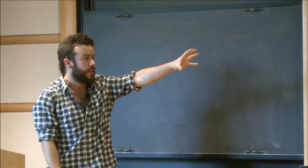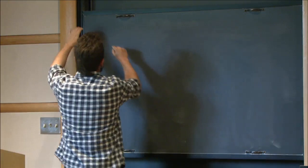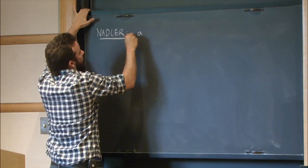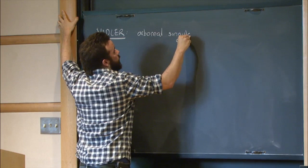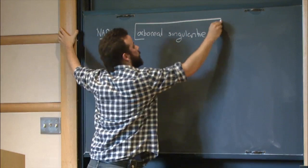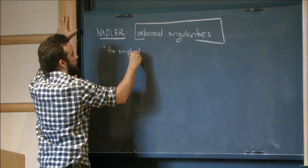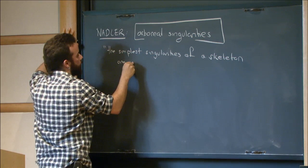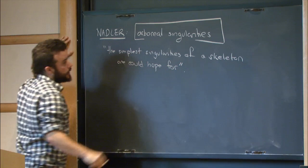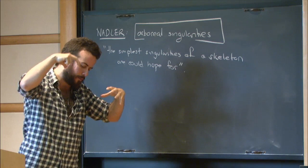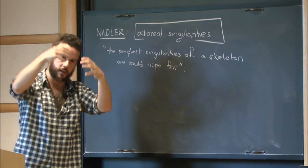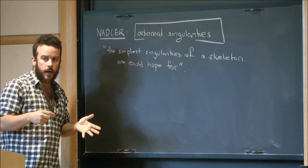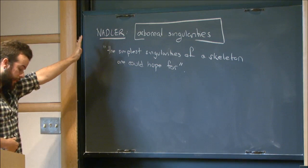So unfortunately, that makes it hard to just work with the stratified set. And what Nadler, David Nadler, introduced is a class of arboreal singularities. The way that I think one can think about them is the simplest singularities of a skeleton that one could hope for. This can be made precise because the skeleton is formed by a bunch of stable manifolds, and these stable manifolds are going to interact with each other. So there's a set of singularities that are just based on iterated cones that are going to be forced on you. And in general, there will be a lot more complicated stuff.